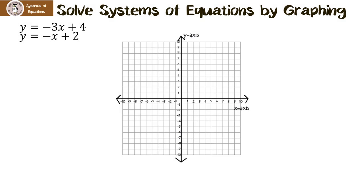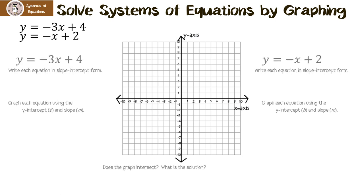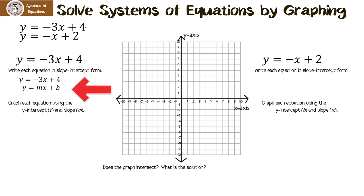We're going to solve the system of linear equations by graphing. Starting with the first equation: y equals negative three x plus four. The first thing we have to do is write each equation in slope-intercept form. We're lucky because it's already in slope-intercept form. Using y equals mx plus b, my slope is negative three over one and my y-intercept is four. Let's graph the y-intercept at four.